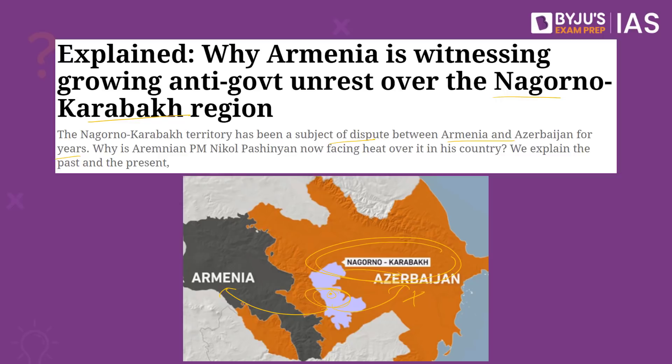As a result, despite this region being decided as part of Azerbaijan, the majority Armenian population is not ready to accept it, leading to conflict. This issue flared up in 2020 with many negotiations monitored by Russia. People in Armenia feel that too many concessions were given to Azerbaijan, and now the population in Armenia is against its government for giving these concessions, which is why this issue has been in the news once again.